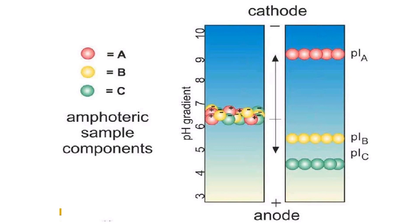Before application of the sample, a potential difference is applied so that the ampholytes can form a pH gradient between the cathode and the anode. After this, the power is turned on and the samples are applied. Unlike other gel matrices, here the sample is not applied in a well — the sample is soaked on a filter paper, and then the filter paper is placed on the gel matrix. Normally in IEF, the sample is placed in the middle of the gel.